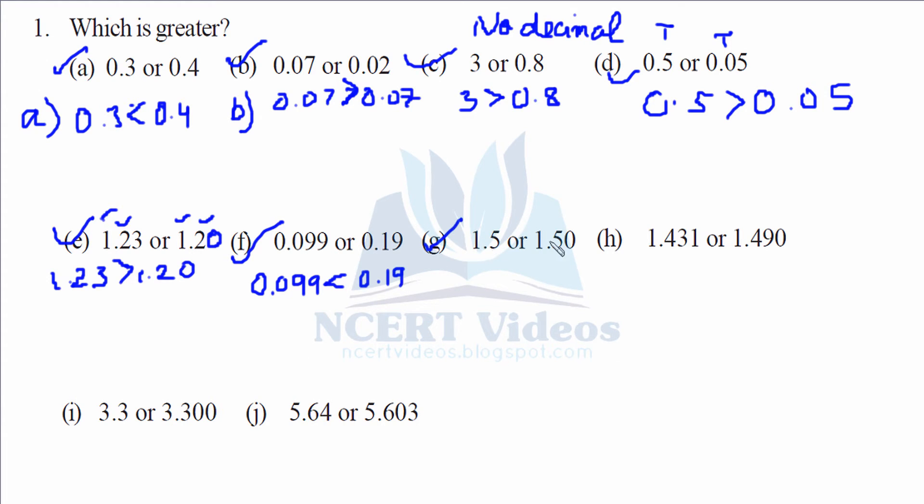Now part g: here again, when there is nothing written, compare it as zero-zero. Therefore both numbers are equal. Part h: compare the hundredths part. Here we have 3, here we have 9. Therefore 1.431 is smaller than 1.490. That makes our part h.